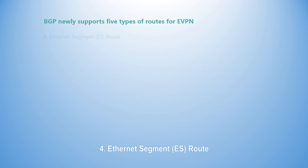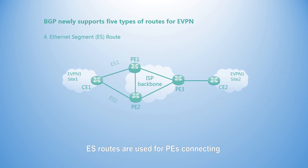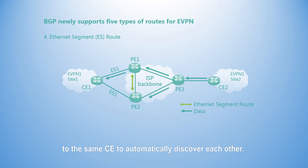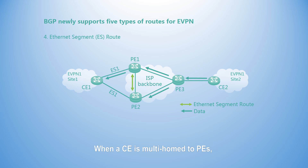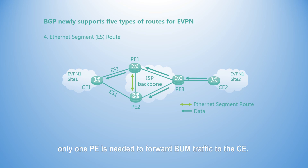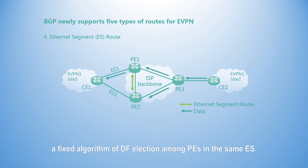Fourth, the Ethernet Segment ES Route. ES routes are used for PEs connecting to the same CE to automatically discover each other. The routes are used for designated forwarder, DF election. When a CE is multi-homed to PEs, to prevent the CE from receiving duplicate traffic, only one PE is needed to forward BUM traffic to the CE. A PE must be elected based on a fixed algorithm of DF election among PEs in the same ES.